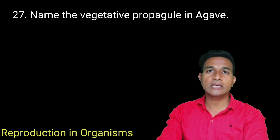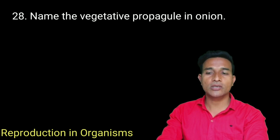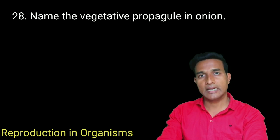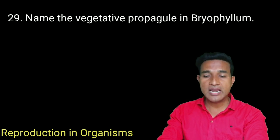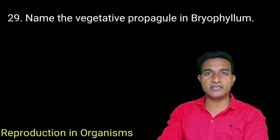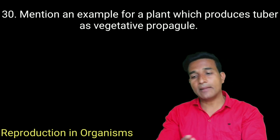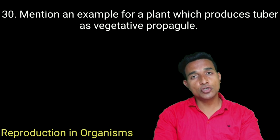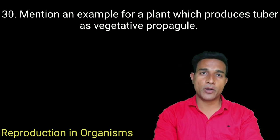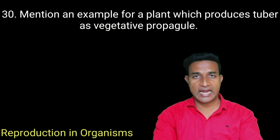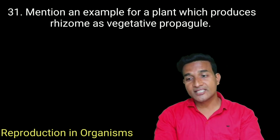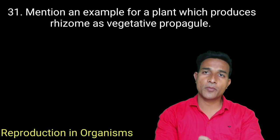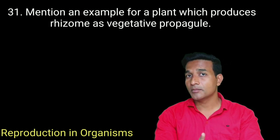Name the vegetative propagule in agave — it is bulbil. Name the vegetative propagule in onion — it is bulb. Mention an example for a plant which produces tuber as a vegetative propagule — potato. Mention an example for a plant which produces rhizome as a vegetative propagule — ginger as well as banana.